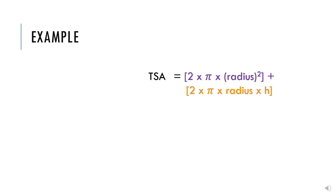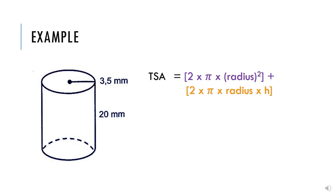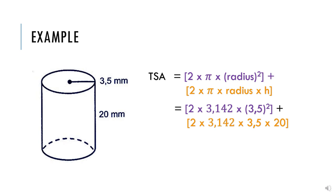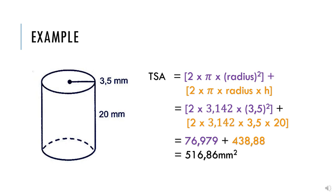We simply add these two values together. In this example, we are given a radius of 3.5 millimeters and a height of 20 millimeters. Substituting into the formula: 2 times 3.142 times 3.5 squared, plus 2 times 3.142 times 3.5 times 20. The formulas will be given to you in tests and exams. You can get the two answers separately on your calculator, or type the whole formula in one go to get the final answer of 516.86 millimeters squared. Remember to only round off at the end.